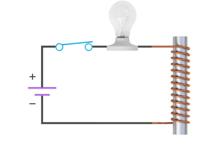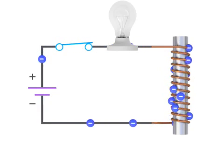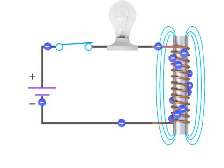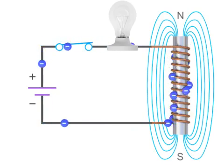As the switch is closed and the current flows through the circuit, the electromagnetic field in the inductor forms and expands rapidly.